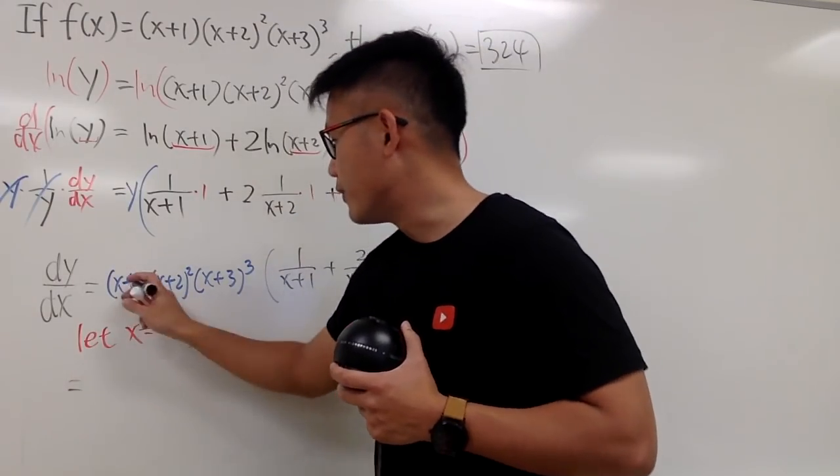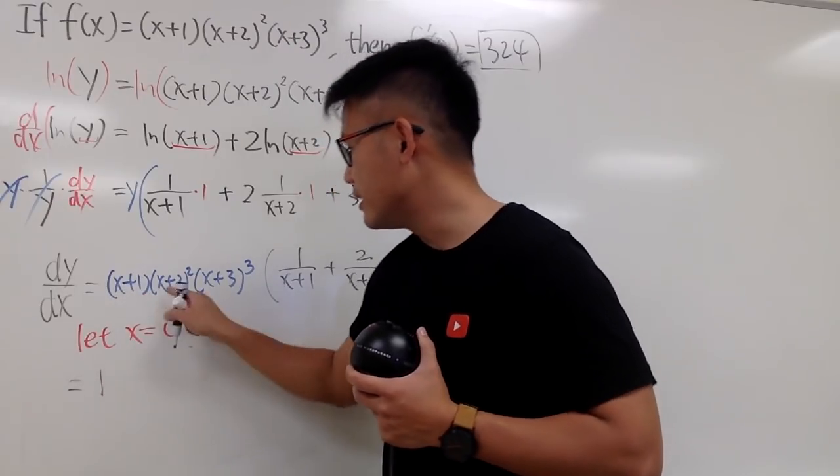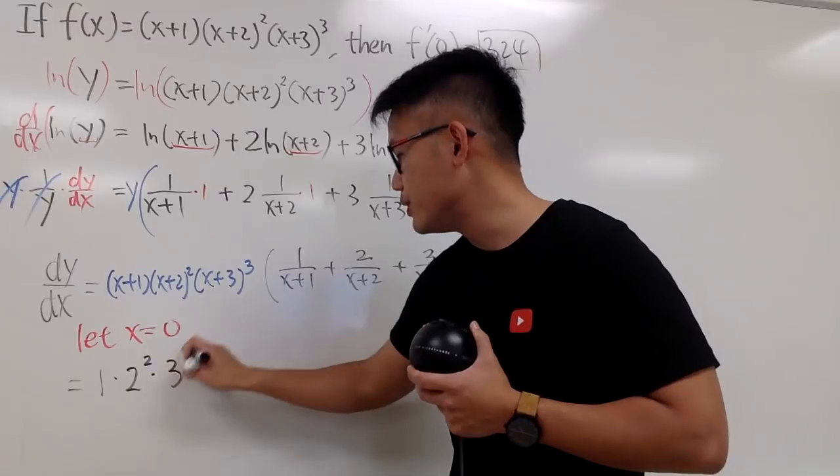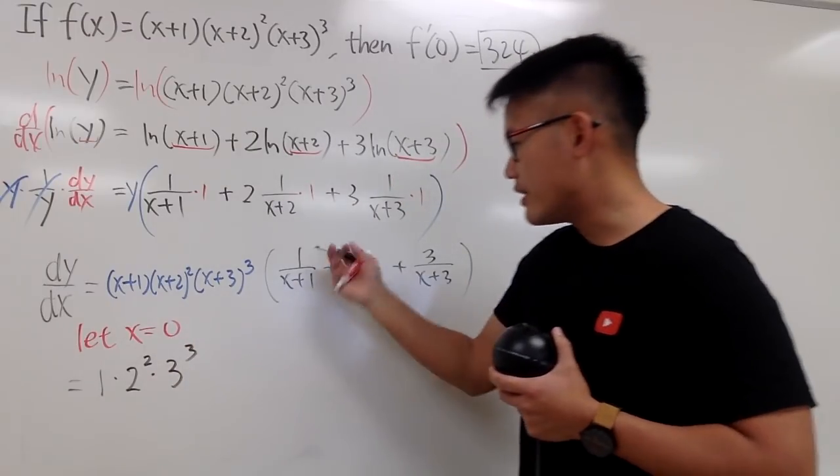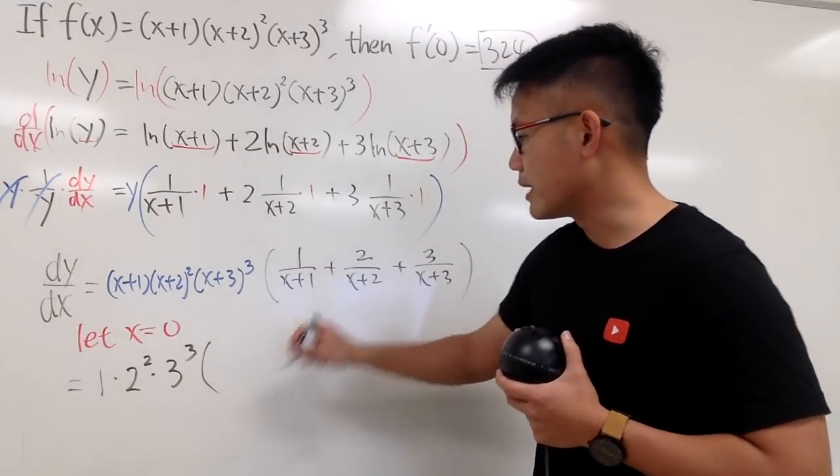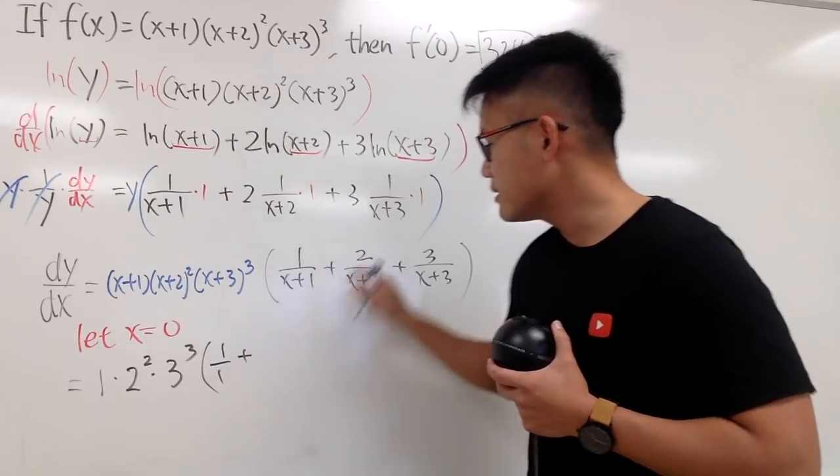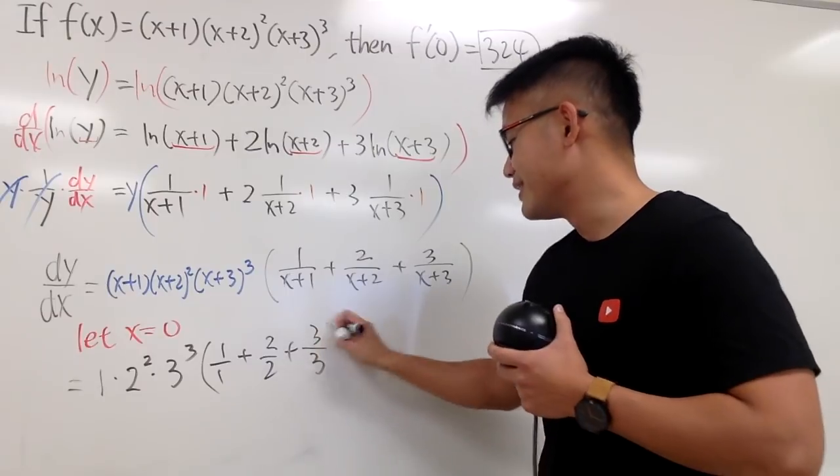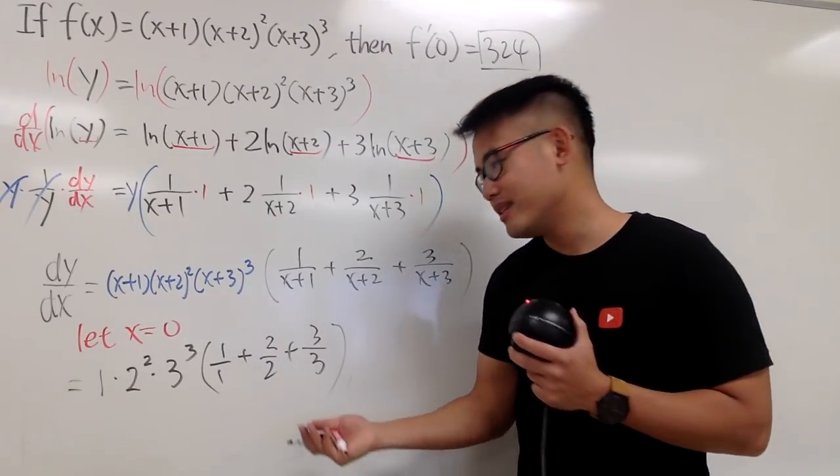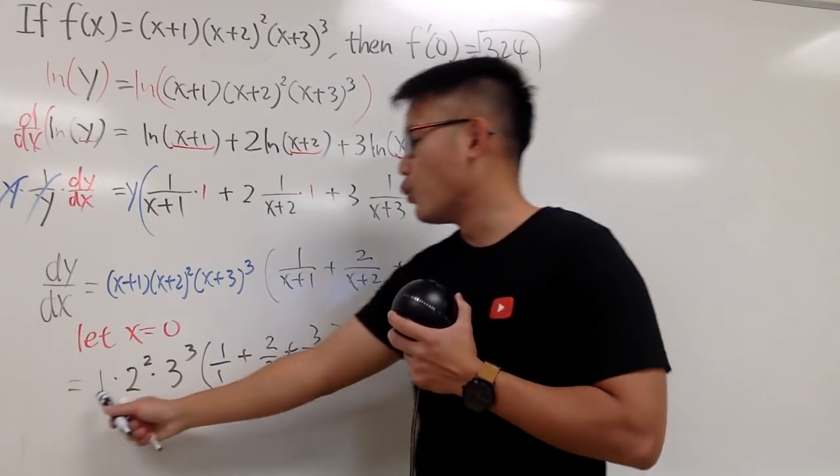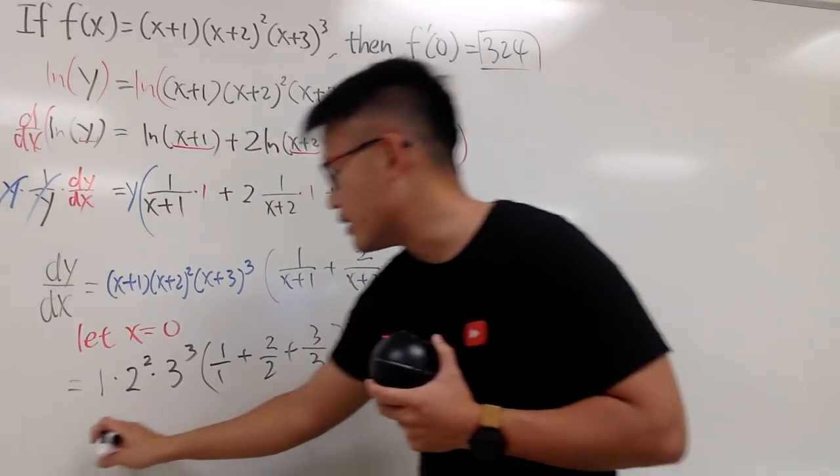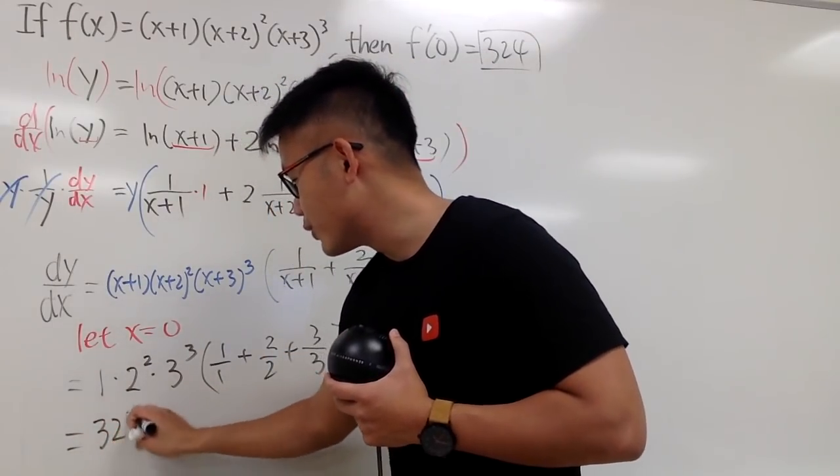So, we see that we first get 0+1, which is 1, and this is going to give us 2 squared, and then this is going to give us 3 to the third power, and then parentheses, 1 over 0+1, which is 1/1, plus 2 over 0+2, which is 2/2, and then, of course, 3/3, like this. And then, multiply out everything. 1 times 4 times 27 times 3. We get the final answer, 324.